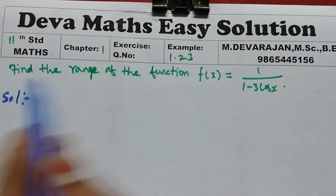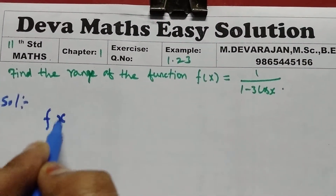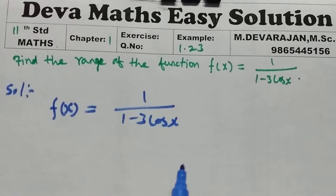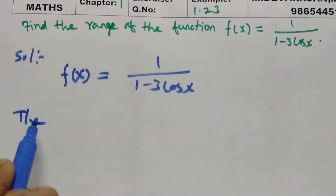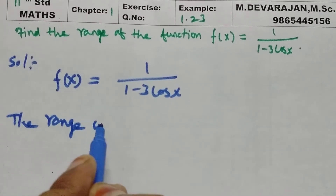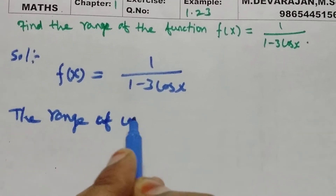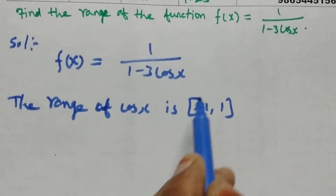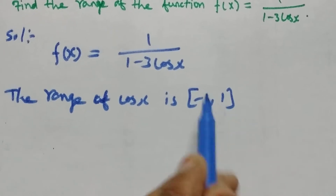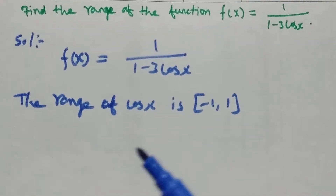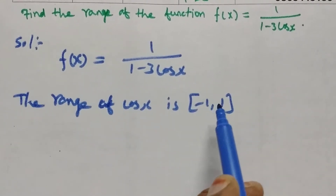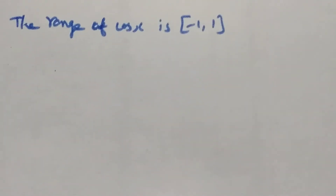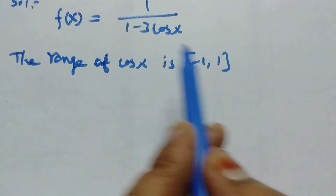In the given function f(x) = 1 / (1 - 3 cos x), we start by noting the range of cos x. The range of cos x is the closed interval [-1, 1].